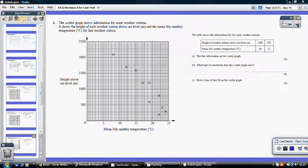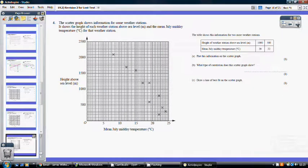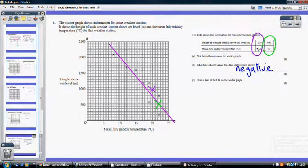Question four. So I've added these two extra points to my graph, the purple one and the green one. What type of correlation? Well, it's negative. And again, I've drawn a line of best fit.